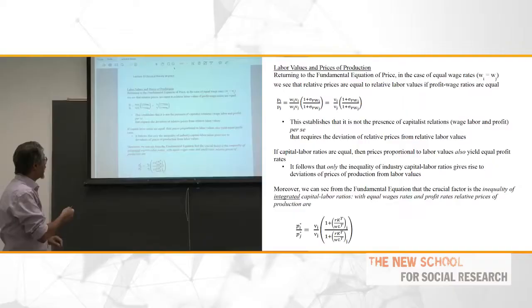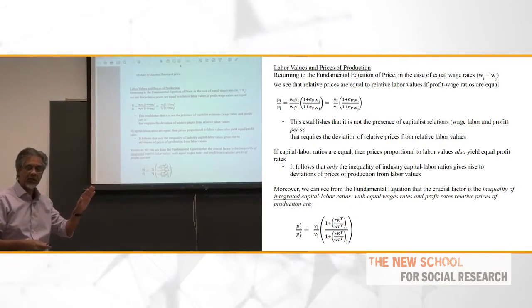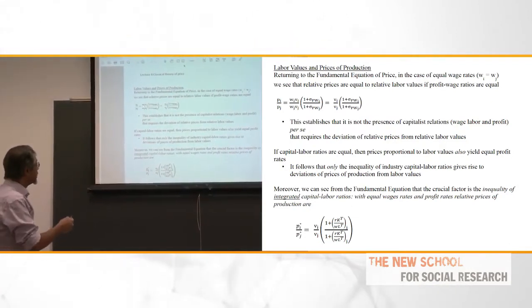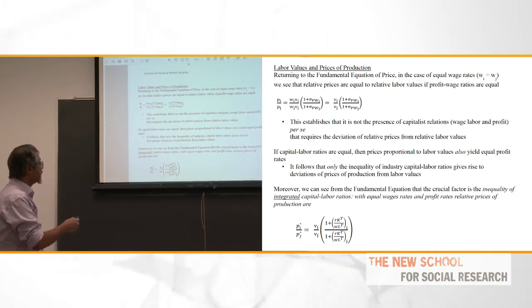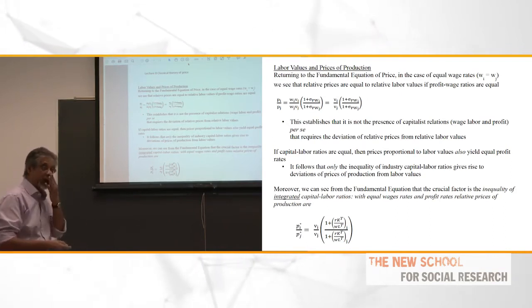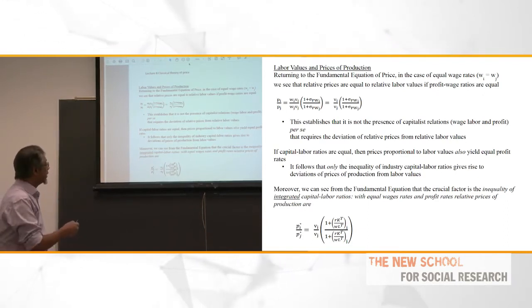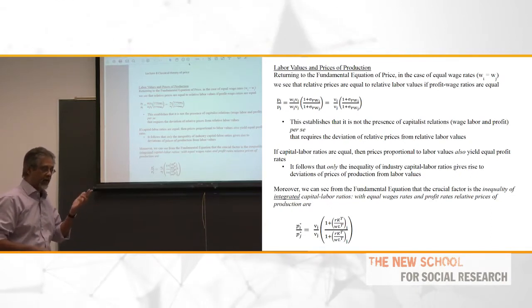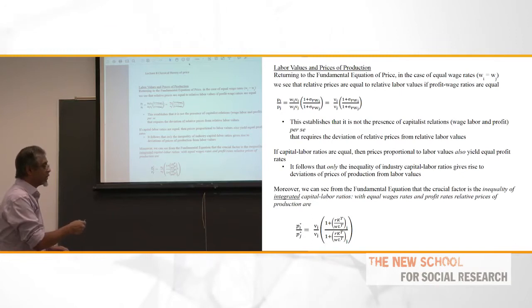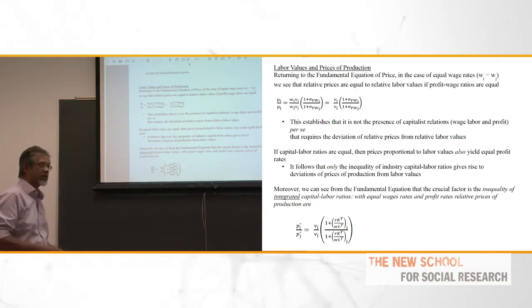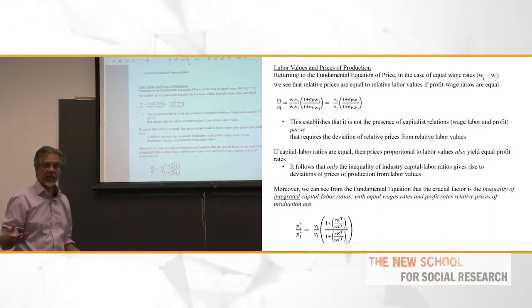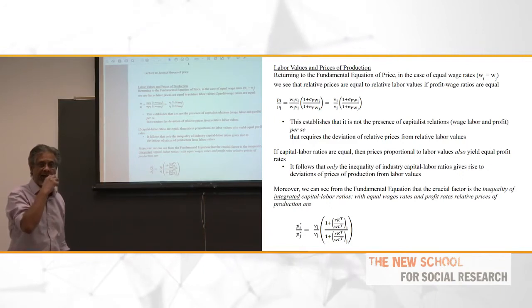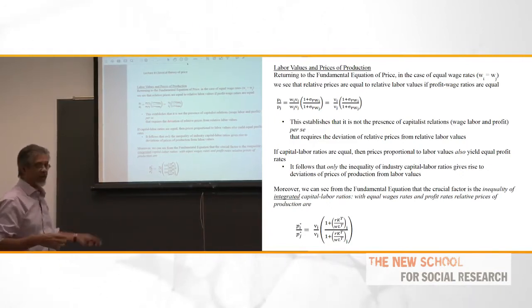I can always break the price into two terms — any price whatsoever, market price, monopoly price. It's just an analytical decomposition: into wages of the i-th sector times the direct and indirect labor time of that sector — the relative vertically integrated unit labor costs — and the second term is the ratio of profits to wages, but vertically integrated, the profit-wage ratio. This decomposition, if wages are equal, depends only on two terms: the ratio of direct and indirect labor time, which is Marx's labor value ratio, and the ratio of profits to wages — the division of value added. If the division of value added is the same across sectors, then prices are directly proportional to labor time.